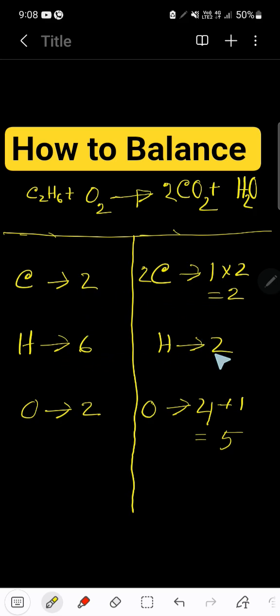Now balance hydrogen. We have 6 on the left and 2 on the right. Multiply H₂O by 3 to get 6 hydrogen atoms. The 3 must come before the atom. This hydrogen came from H₂O, so place 3 there: 3 times 2 gives 6 hydrogen. Now we have 3 oxygen atoms here.